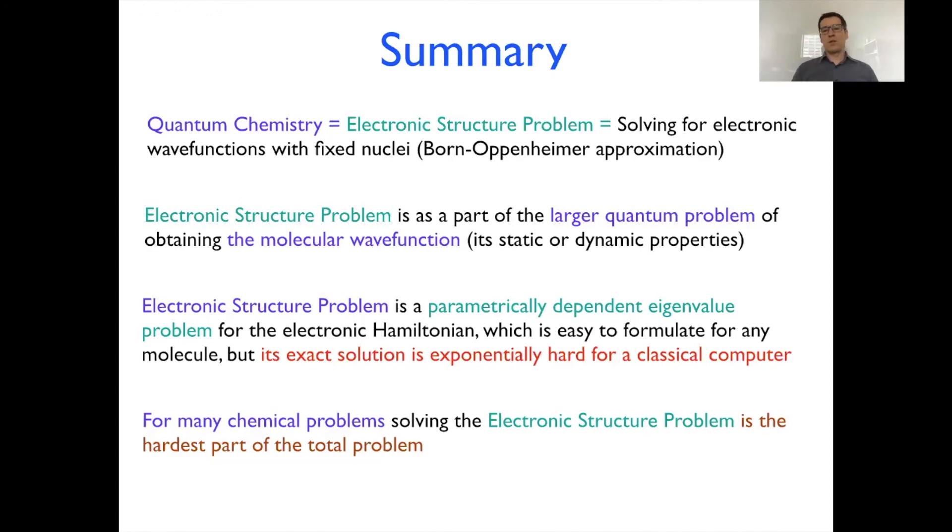From a mathematical point of view, electronic structure problem is an eigenvalue problem with fixed parameters. At the moment of solving for the electronic variables, you keep the nuclear configuration fixed. And then if you want to obtain the potential energy surfaces, you need to redo the calculation in a different configuration of nuclei.